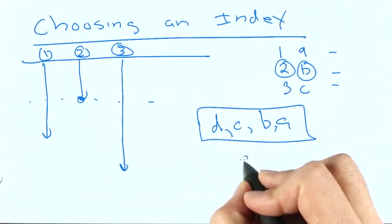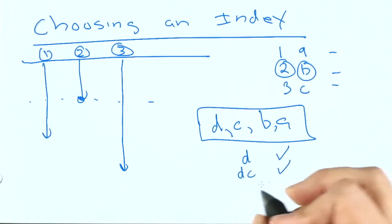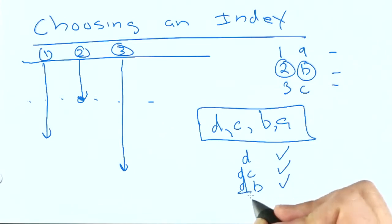So if you specify just D, it can use the index. If you specify D and C, it can use it. If you specify D and B, it can use it, but it only really uses the D part.